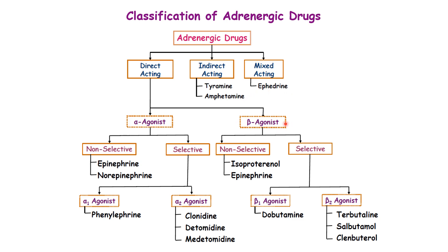For beta agonists, they have affinity to the beta receptor and intrinsic activity at that receptor. Beta agonists can be non-selective — stimulating either beta-1 or beta-2 — such as isoproterenol and epinephrine. For selective beta-1 agonists, we have dobutamine. For selective beta-2 agonists, we have terbutaline, salbutamol, and clenbuterol.